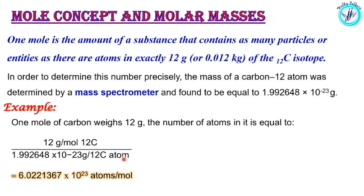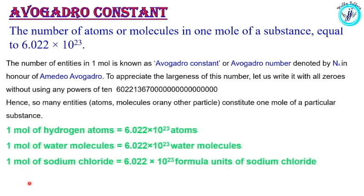We get the answer: 6.0221367 × 10²³ atoms per mole. Now we move on to Avogadro's constant. We use Avogadro's constant: 6.022 × 10²³. We denote Avogadro's number as capital N.